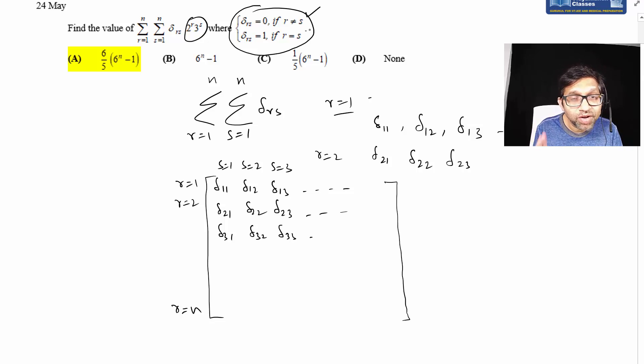If you try to fill this grid, all elements where r not equal to s become zero. Only the diagonal remains where r equals s, and those diagonal elements equal one. Above and below the diagonal, everything in the grid is zero.